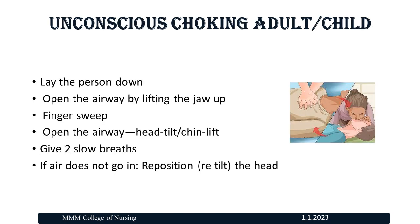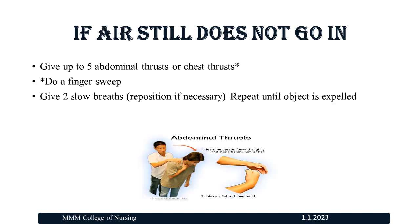If an unconscious choking adult or child: lay the person down, open the airway by lifting the jaw up, perform a finger sweep, open the airway with head tilt and chin lift, give 2 slow breaths. If air does not go in, reposition and retilt the head. If air still does not go in, give up to 5 abdominal thrusts or chest thrusts, do a finger sweep, give 2 slow breaths, reposition if necessary, and repeat until the object is dislodged.